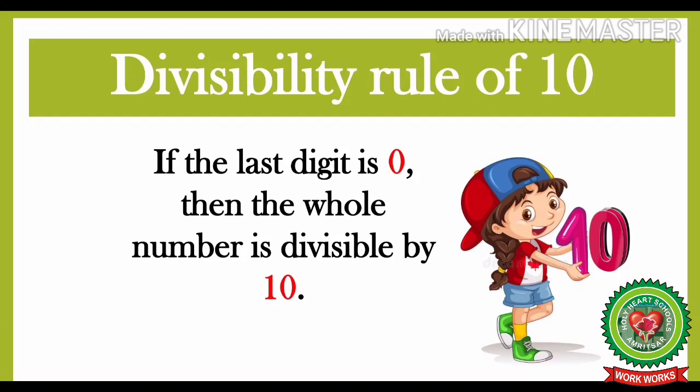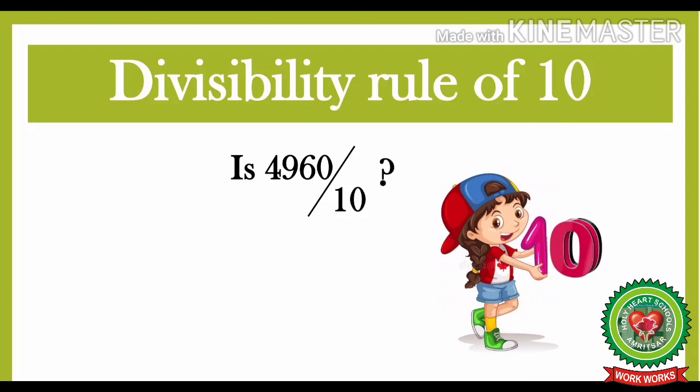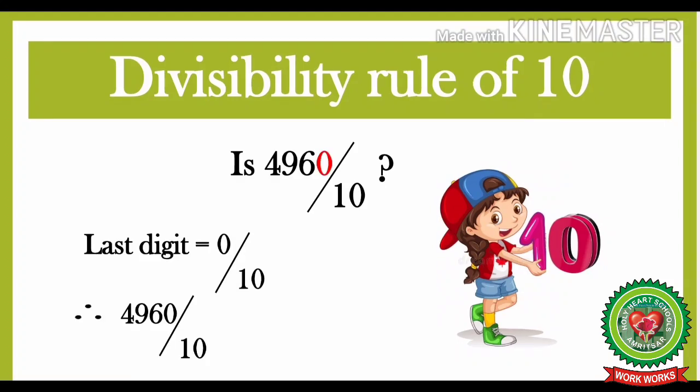Now let us discuss the divisibility rule of 10. If the last digit is 0, then the whole number is divisible by 10. Let us understand with an example. Is 4960 divisible by 10? Let us look at the last digit. The last digit is 0. As the rule says, if the last digit is 0, then the whole number is divisible by 10. So, the last digit is 0, it is divisible by 10. Therefore, 4960 is divisible by 10.